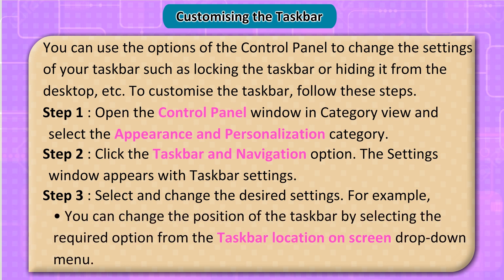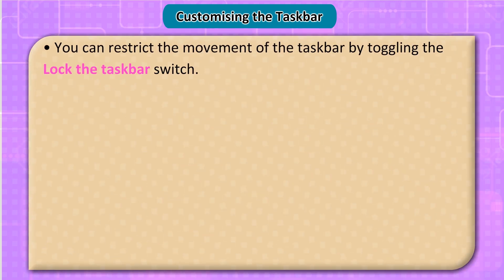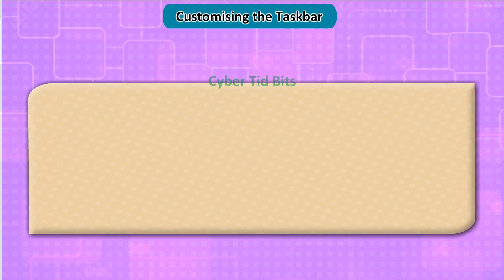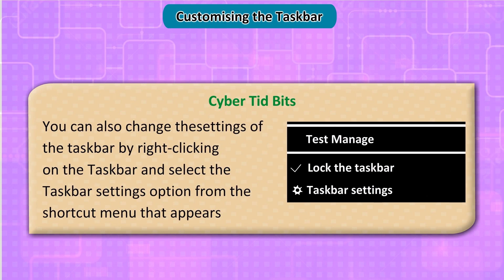For example, you can change the position of the taskbar by selecting the required option from the Taskbar Location on Screen drop-down menu. You can restrict its movement by toggling the Lock the Taskbar switch. You can toggle the Automatically Hide the Taskbar in Desktop Mode switch to make it disappear when not in use. You can also right-click the taskbar and select Taskbar Settings.